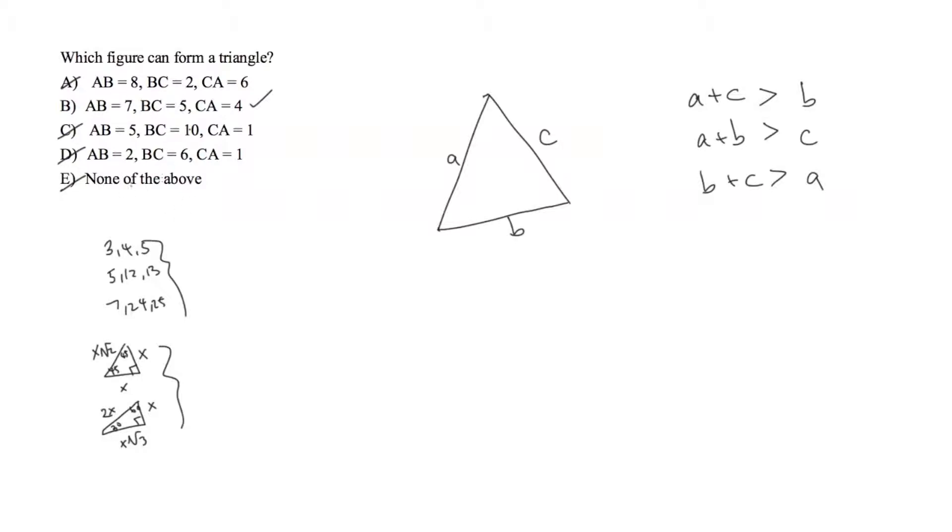Obviously we got b to work so none of the above would not be the right answer. So in this case looks like b would be our right answer. So again the rule is you just take each combination so whether it's a c, a b, b c - just combination of two of those sides and when you sum them up they would have to be greater than the third side.